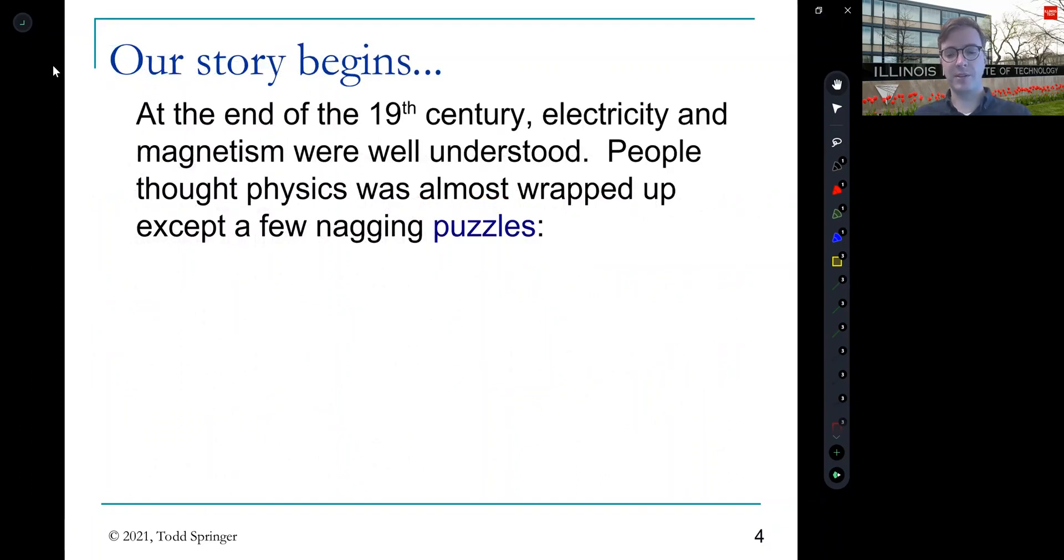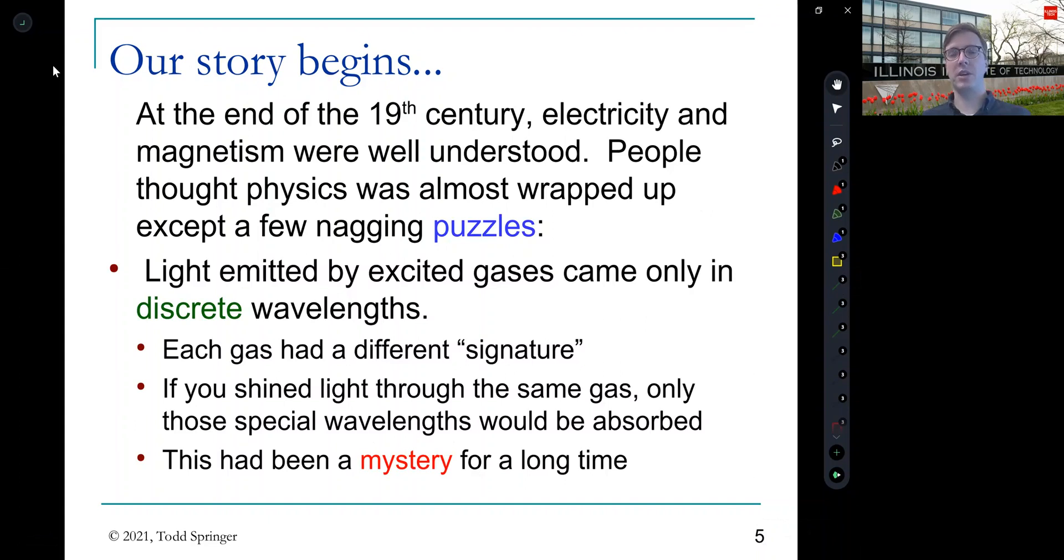So at the end of the 19th century, Maxwell had come up with his theory of electromagnetism, and it was a beautiful theory which matched well with experiments. And people thought that physics was pretty much wrapped up. There were a few nagging puzzles that people couldn't quite understand. So if you take a gas and you pass a current through it, it gives off light. And then you pass that light through a spectrometer or a grating, and you see that only a few wavelengths are in that light. And furthermore, each gas that you did this with, like if you did it for hydrogen or helium or mercury, you got a different set of wavelengths.